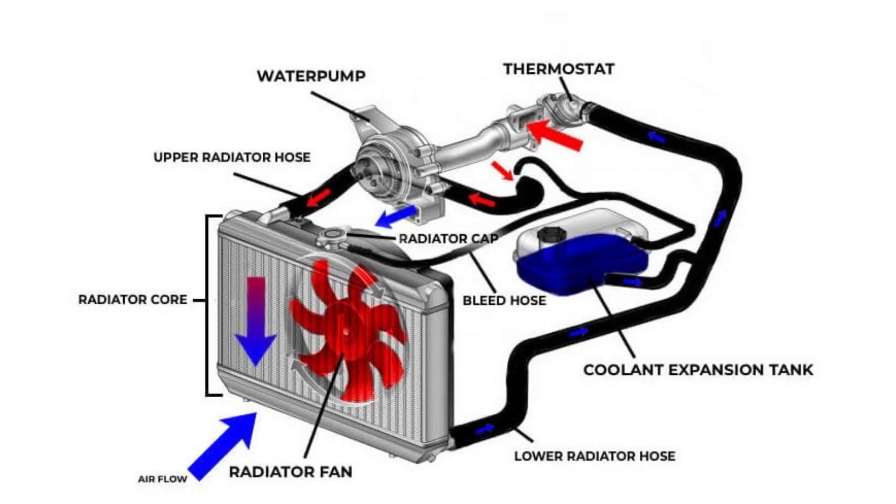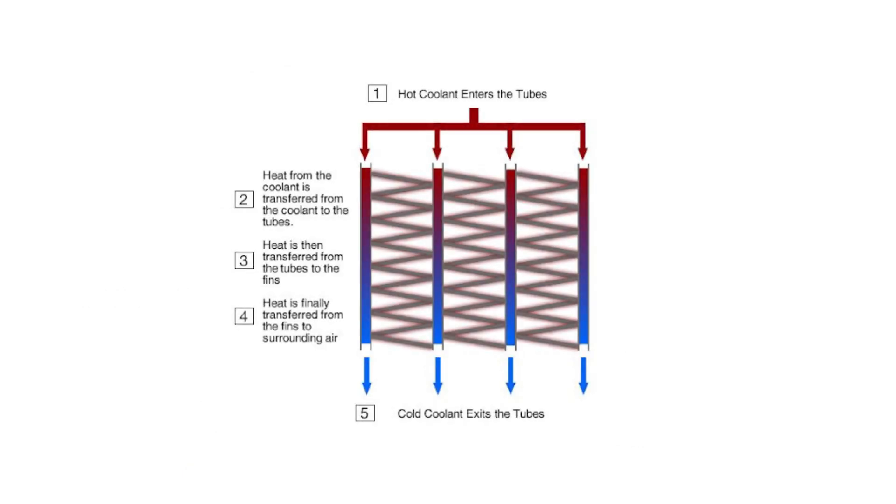The coolant circulates through the radiator's cores and transfers heat from core to fins, which increase the surface area for heat exchange. As the coolant flows through the radiator, the heat is absorbed by the fins and released into the air, preventing the engine from overheating.